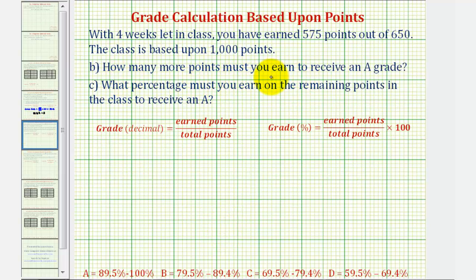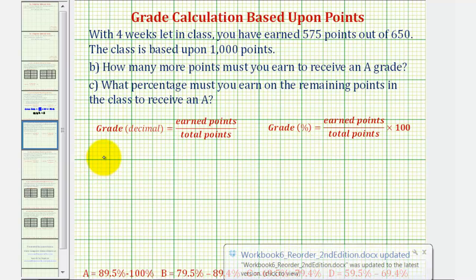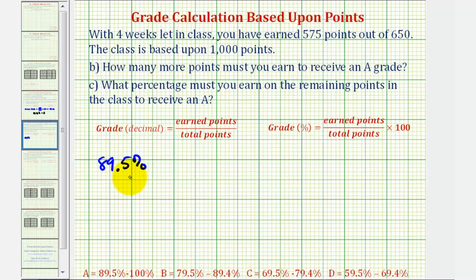We want to know how many more points must you earn to receive an A grade. Again, notice the lowest A grade would be 89.5%. But for this question, I think it will be a little bit easier if we look at the grade as a decimal. So let's go ahead and convert this to a decimal. We would divide by 100, move the decimal point to the left two places. That would be 0.895. So we must have at least this grade in order to receive an A for the semester.